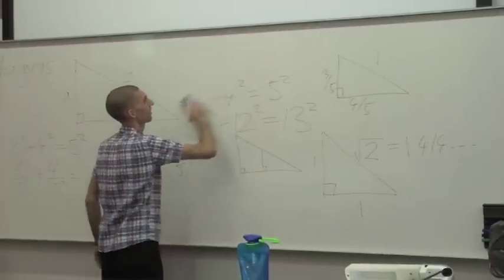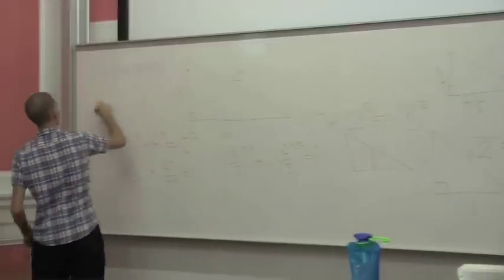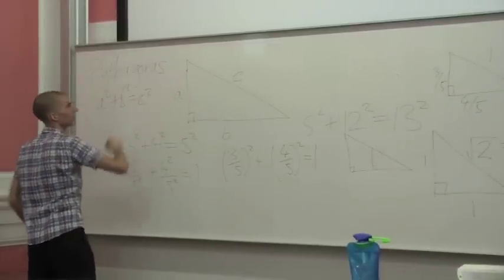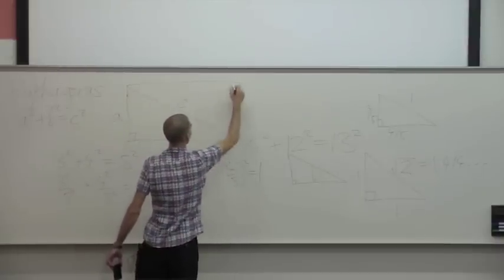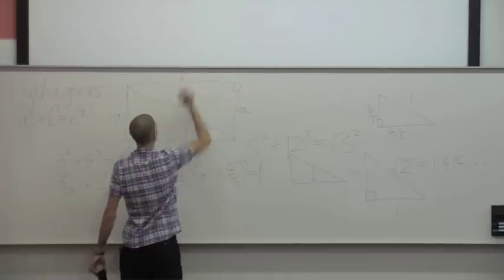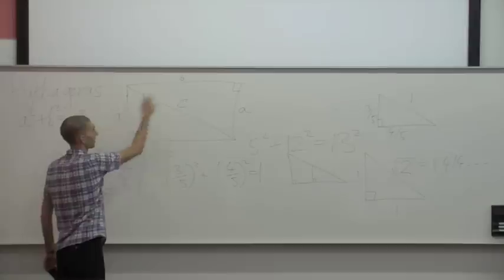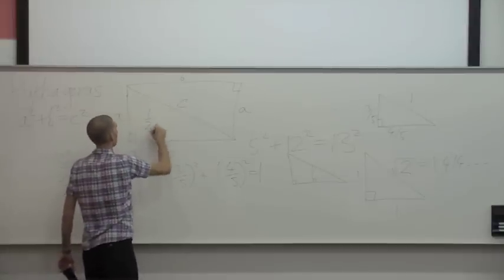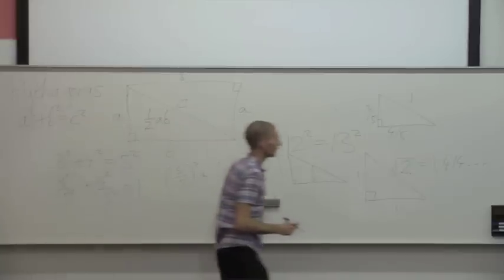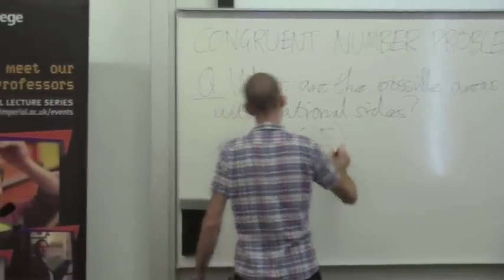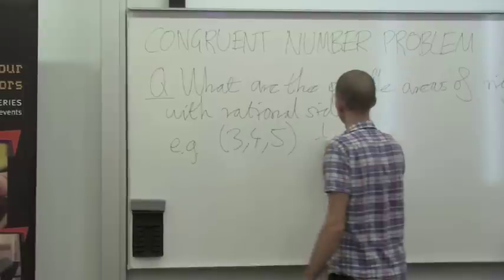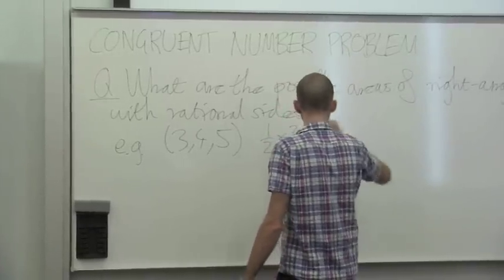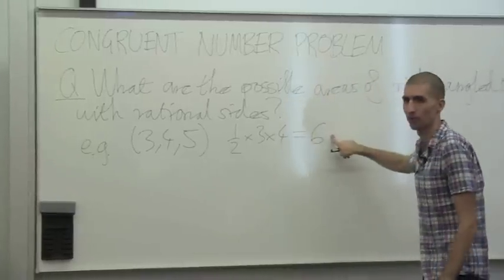Let's look at a right-angled triangle with sides a and b. If you want to work out the area, you put another copy of the triangle up here to make a rectangle. The area of the rectangle is a times b, so the area of the triangle is one half times a times b. For the 3, 4, 5 triangle, the area is one half times 3 times 4, which is 6. So 6 is an example of what they were calling a congruent number.